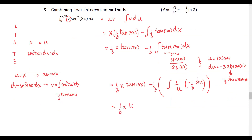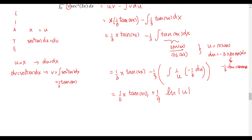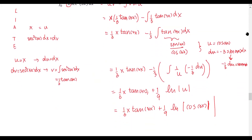That gives us one third x times tangent 3x, and the negative times negative becomes positive, plus one ninth times the natural log of the absolute value of u. Substituting back, u equals cosine of 3x, and we evaluate from 0 to pi over 9.